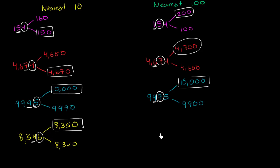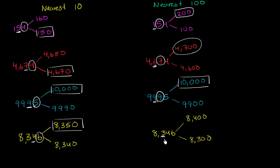Now let's round 8,346 to the nearest hundred. The multiple of 100 above this is 8,400, and the multiple of 100 below this is 8,300. If we round up, the hundreds place becomes a 4; if we round down, the hundreds place stays at 3 followed by zeros. To round to the nearest hundreds, we look at the tens place. The tens place is less than 5, so we round down to 8,300. Notice: when we rounded to the nearest tens we rounded up to 8,350, but rounding to the nearest hundreds we rounded down to 8,300.